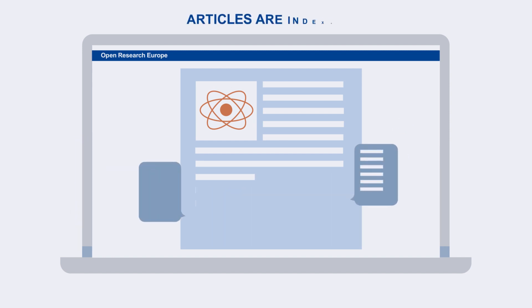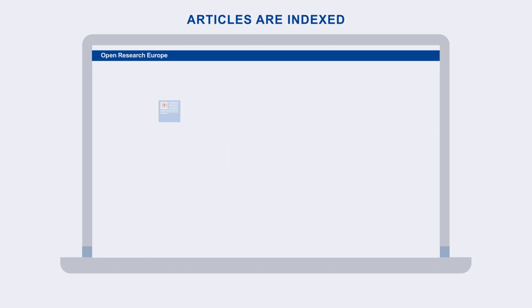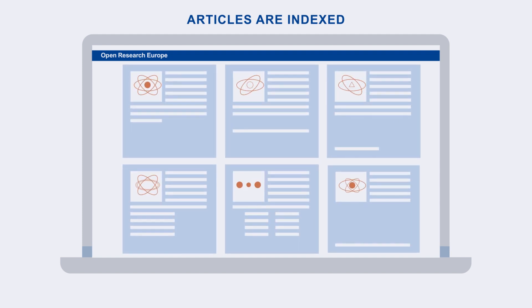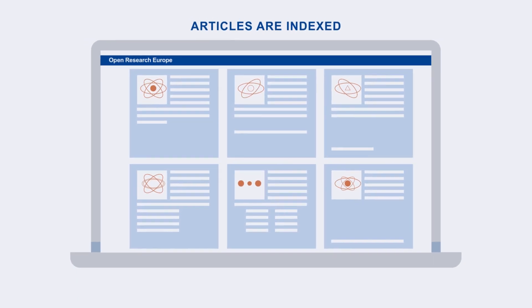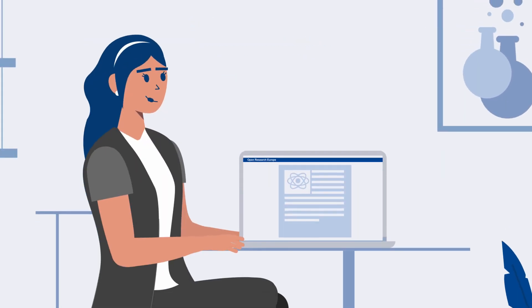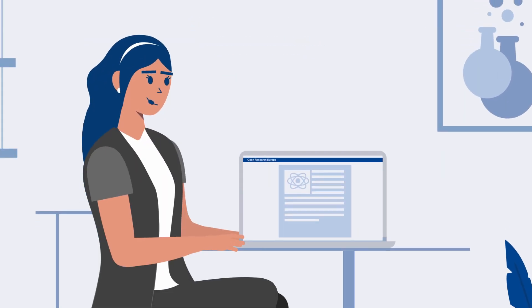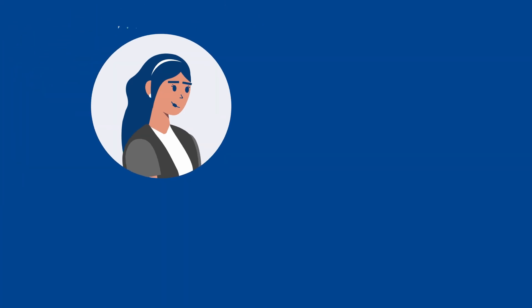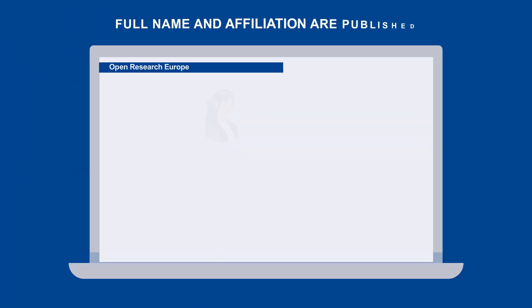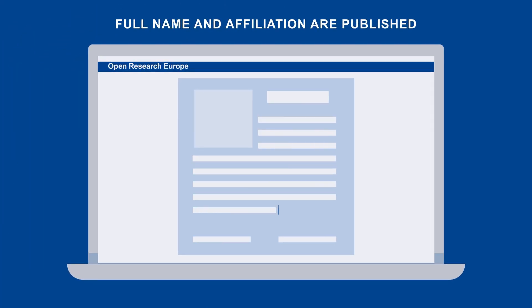Articles that have passed peer review are indexed along with their associated reviews. To allow reviewers to get credit and recognition for their work, their full name and affiliation are published with their peer review report.